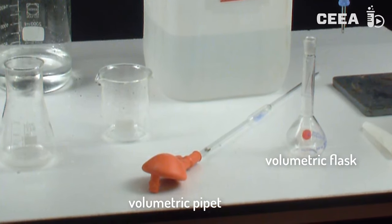An accurate volume of the original sample is taken with a volumetric pipette, brought into a volumetric flask and diluted with water.